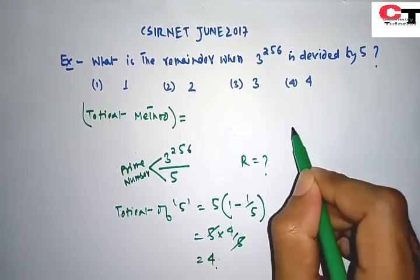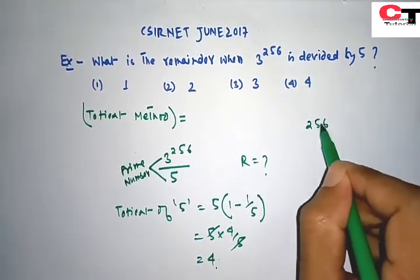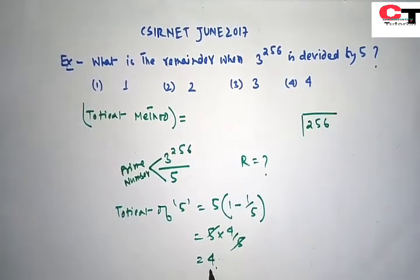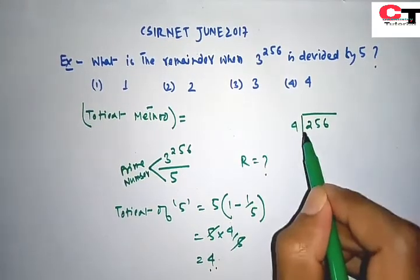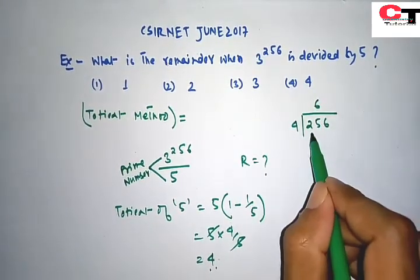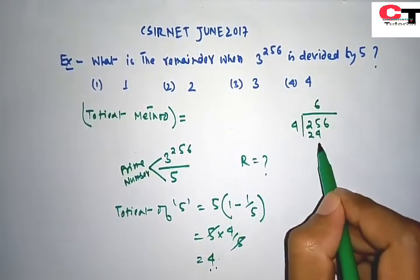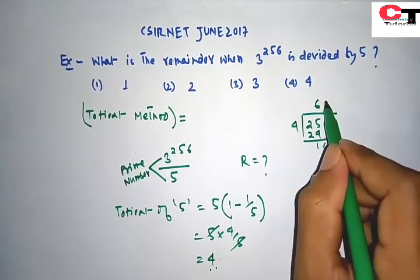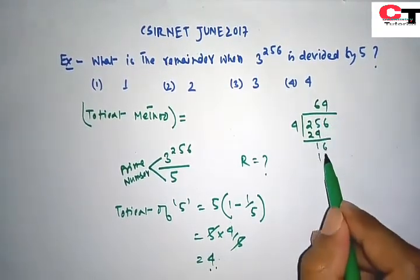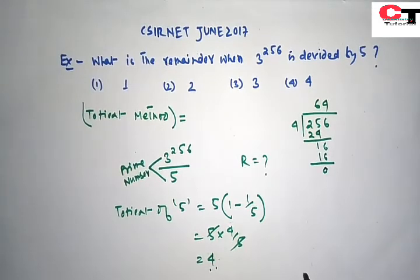If we divide the power 256 by Toshin of 5, which is 4, then we get 64, remainder 0.